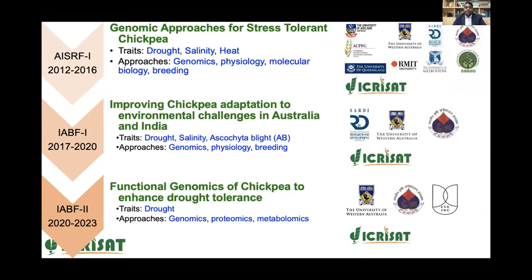We have been very successful in having several collaborative projects with Australia, including AISRF1. Partners included UWA, University of Adelaide, ACPFG, University of Queensland, RMIT University, University of Melbourne, and Indian institutions including IARI and NIPGR. A second project had more focus on drought, salinity and Ascochyta blight, again with several Australian partners. Now we have a third project working with the University of Western Australia, IARI and JNU. ICRISAT has a really long and successful track record of collaborating with Australian universities and institutes to contribute in this direction.